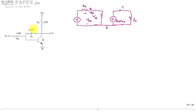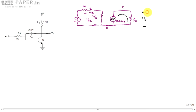Now calculating voltage gain: V0 is the voltage across RC. V0 equals the current GM·VBE flowing through RC. The current source GM·VBE flows upward, but the expected polarity of V0 is plus-minus (current flowing downward), so we must write V0 as minus GM·VBE times RC.